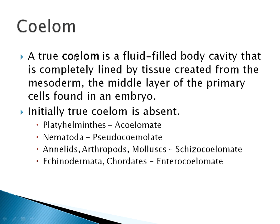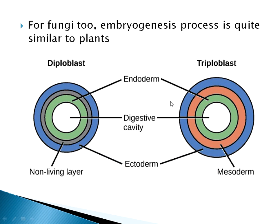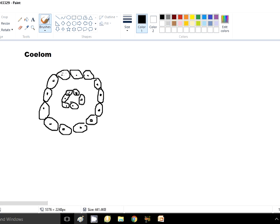Now let us talk about the coelom. A true coelom is a fluid-filled body cavity completely lined by tissue created by the mesoderm — the middle layer of primary cells found in the embryo. If it is a true coelom, there is a cavity within the mesoderm that is lined by mesodermal cells. The cells are arranged forming the ectoderm on the outside and the endoderm on the inside.